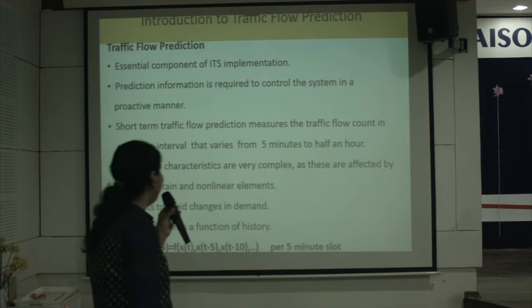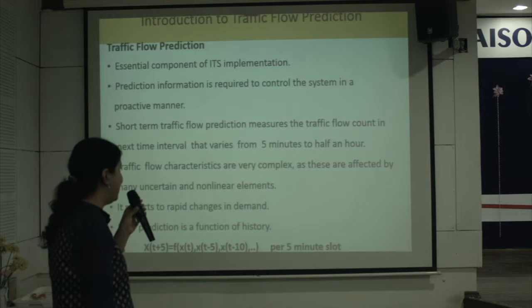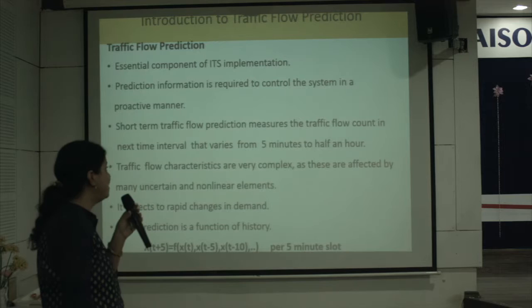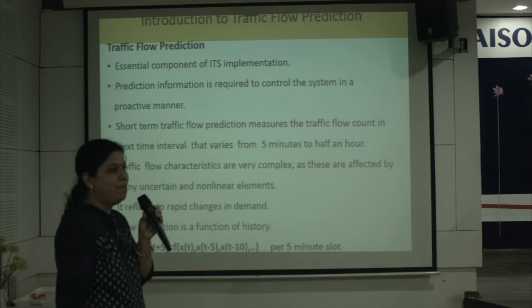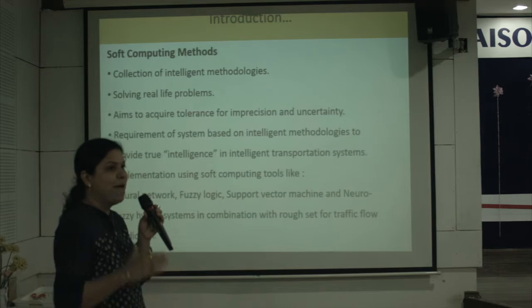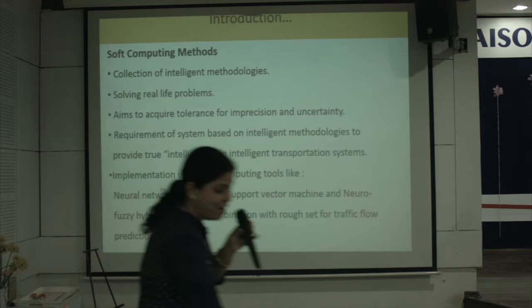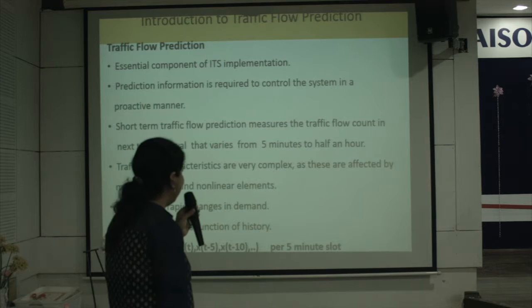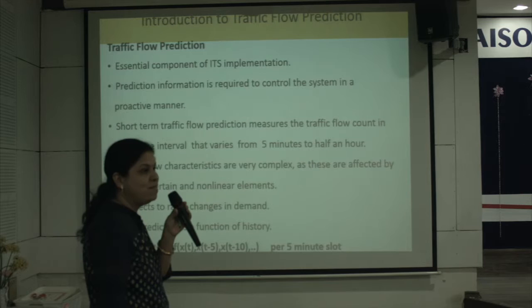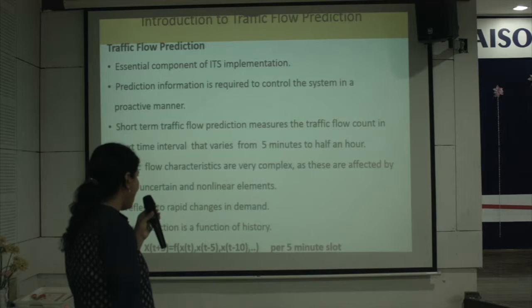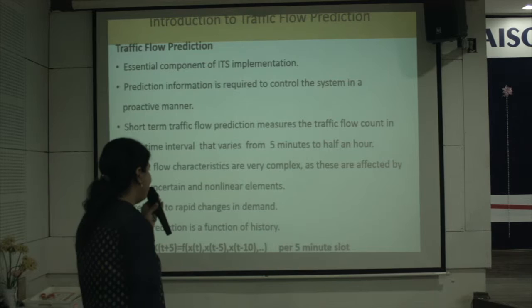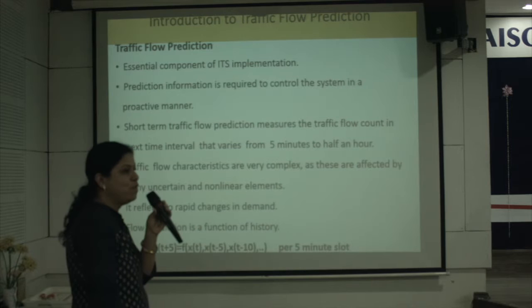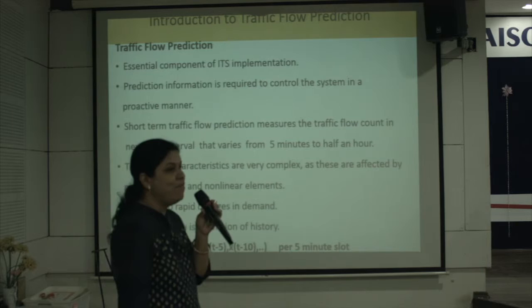Traffic flow prediction is an essential component of intelligent transportation system implementation. This prediction information is required to control the system in a proactive manner. Two types of flow predictions can be done: short-term and long-term. Long-term prediction predicts traffic flow by month or year in advance, whereas short-term traffic flow prediction predicts the count in the next time interval, varying from 5 minutes to half an hour. Since traffic flow characteristics are very complex and affected by many uncertain and non-linear elements, the flow prediction is a function of history, represented mathematically as x(t+5) = f(past samples), with intervals per 5-minute slot.